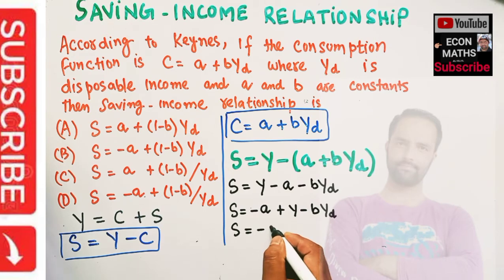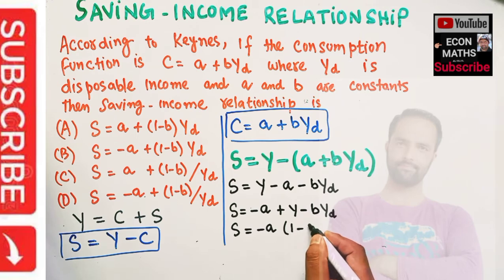Or S = -A, let us take Y common, so we are left with (1-B)*Y_D. This is the relationship between savings and income.